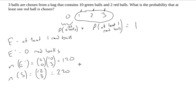So the probability of E complement is 120 out of 220. Thus, the probability of E is 1 minus the probability of E complement.